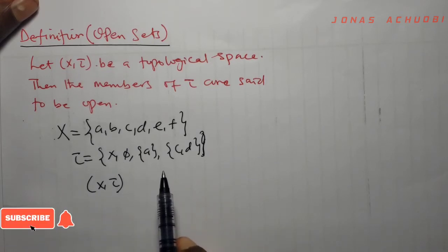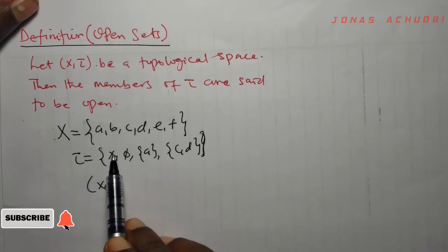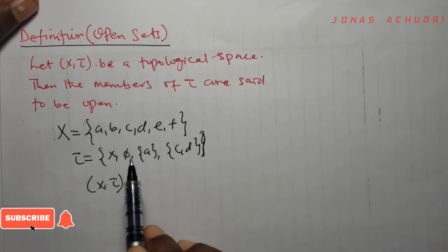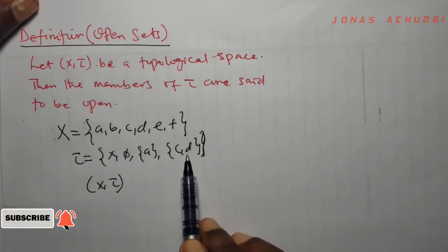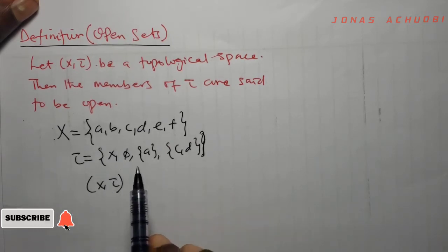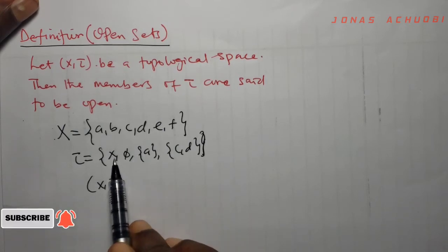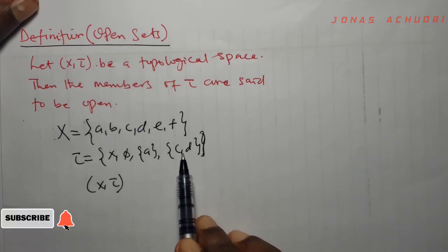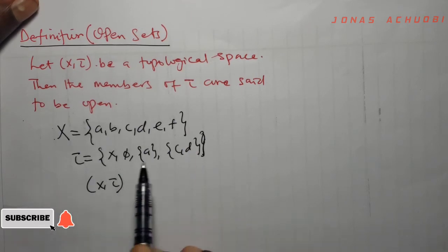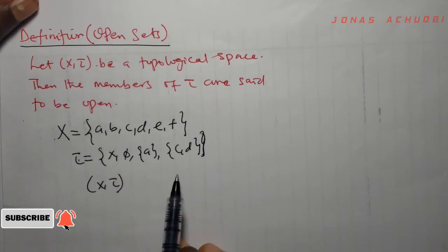So if we are asked how many open sets we have on this space, there would be four open sets: X, the empty set, the singleton set A, and the set {C, D}. So members of the topology are called open sets.